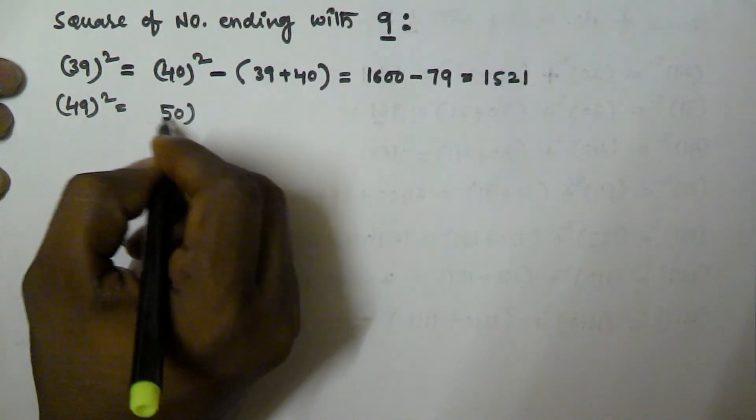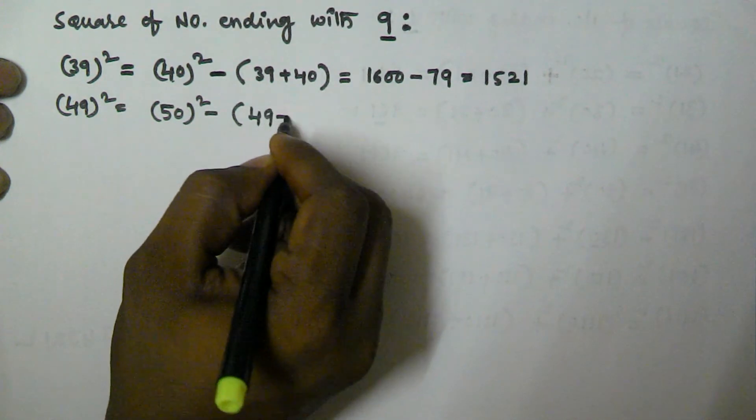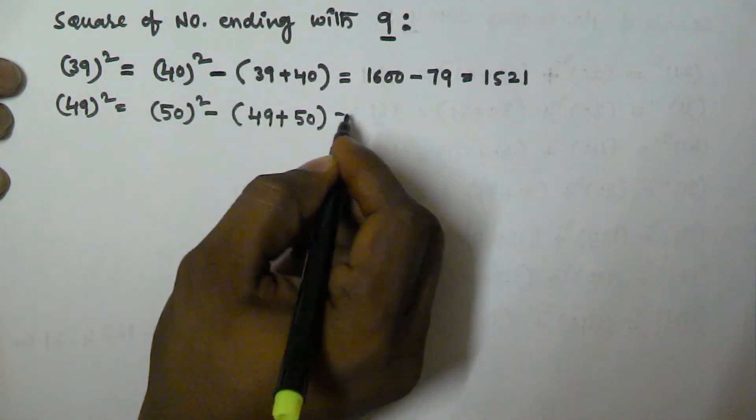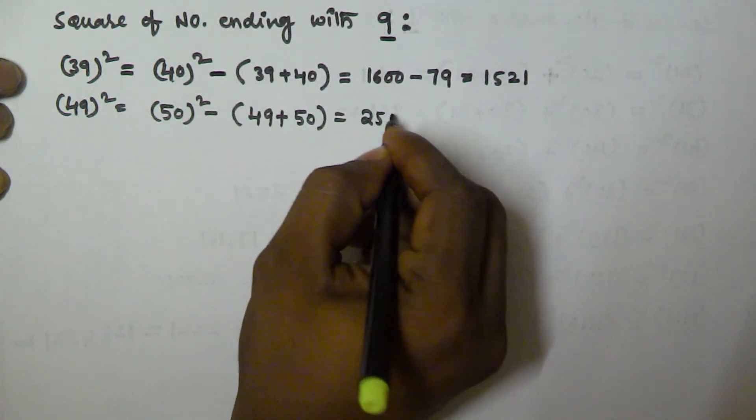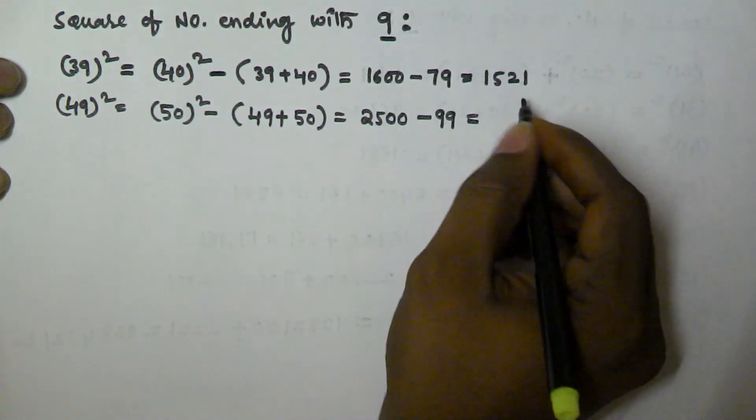So this is going to be 2500 minus 99, that is equivalent to 2401.